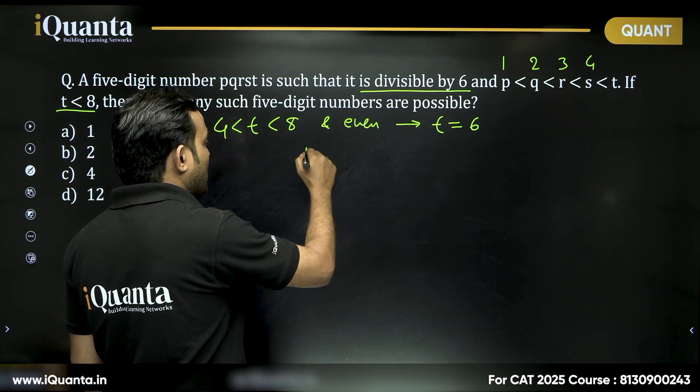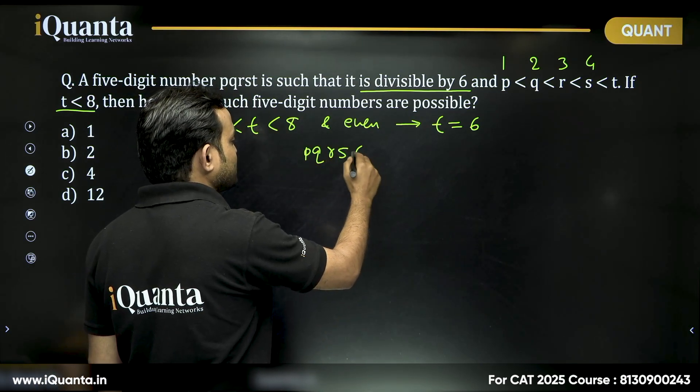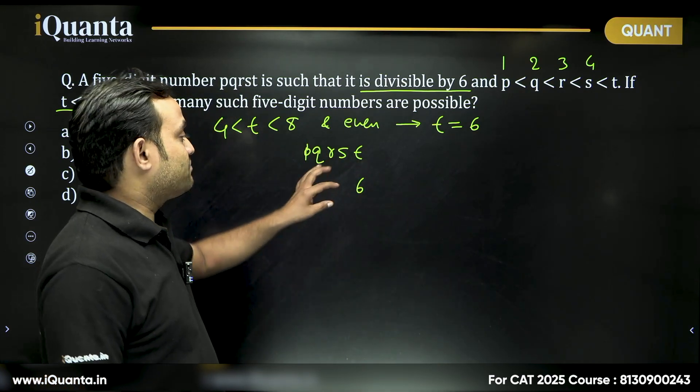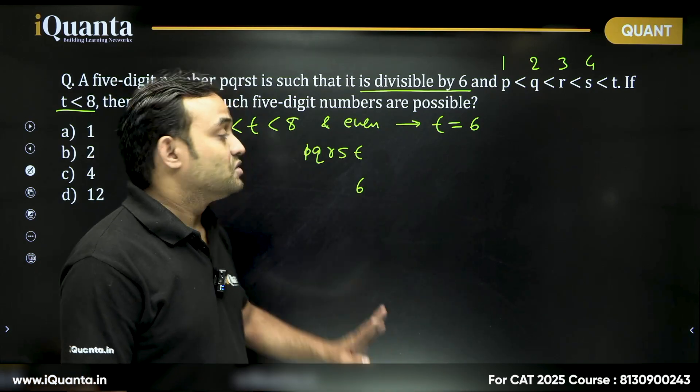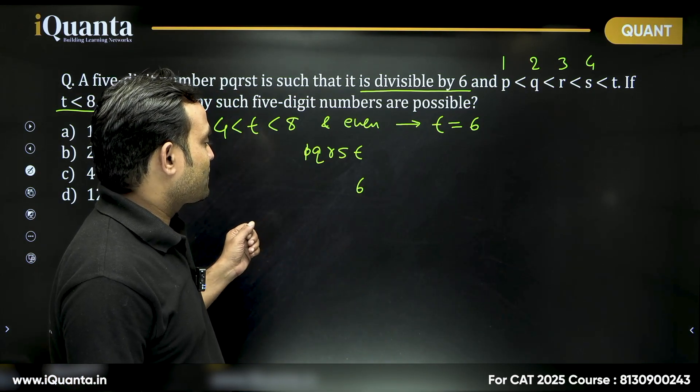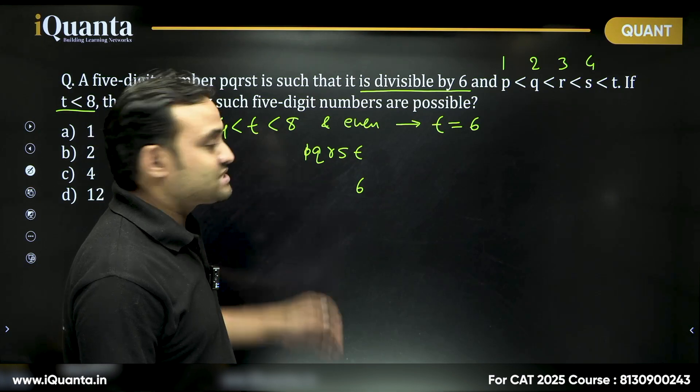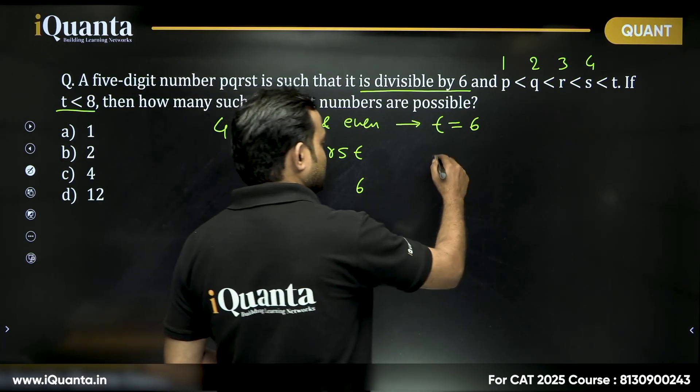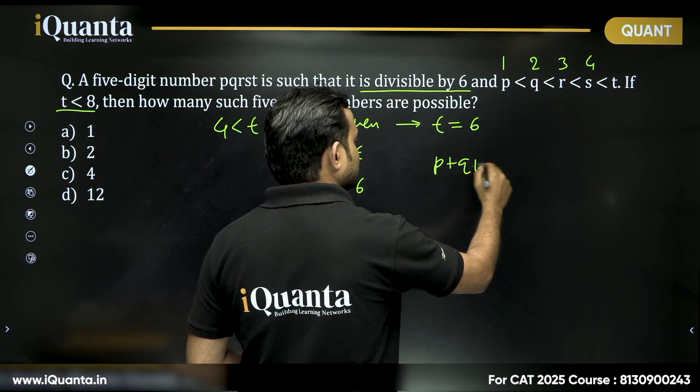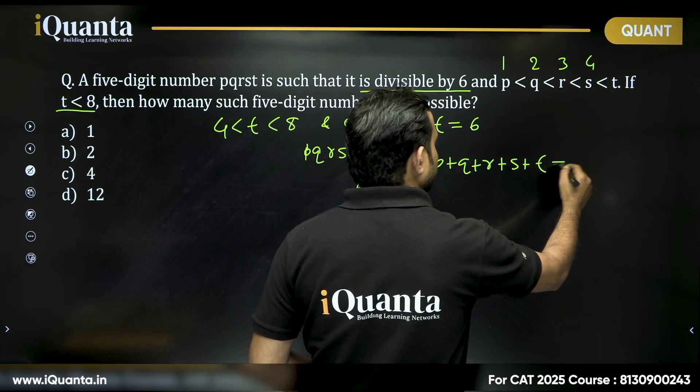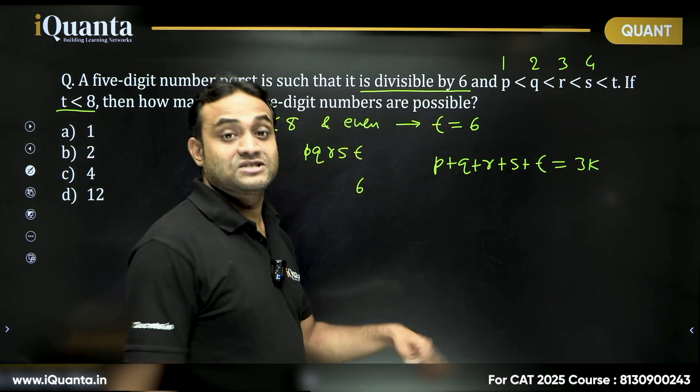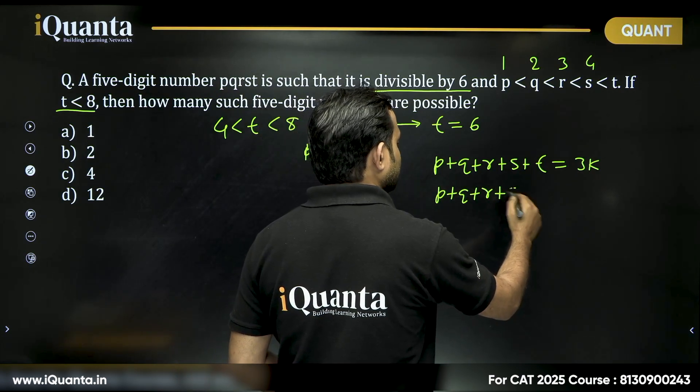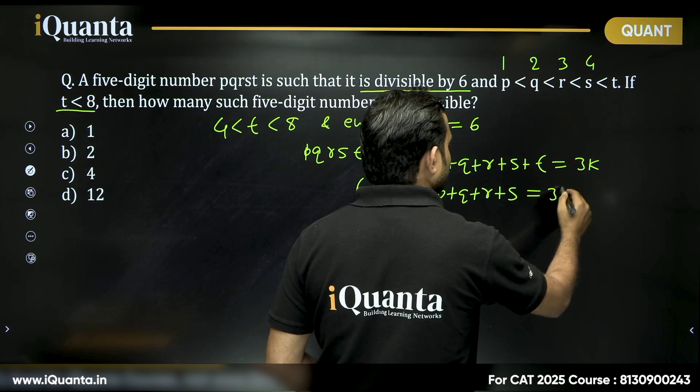We can say our number is P, Q, R, S, T and instead of T, I am taking 6. Now, this number is divisible by 2 already. But what do we see? That if this number is divisible by 6, then it must also be divisible by 3. That means P plus Q plus R plus S plus T must be multiple of 3. Now, T is already 6. That means we can say P plus Q plus R plus S must also be multiple of 3.